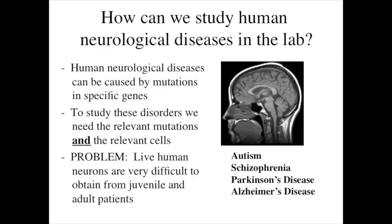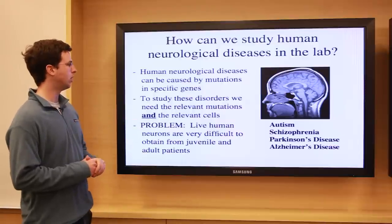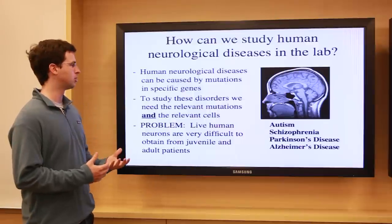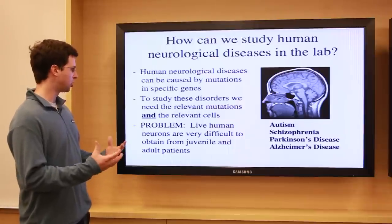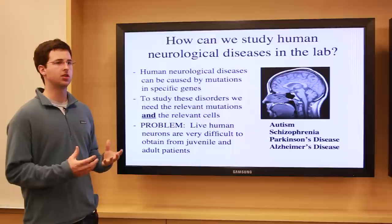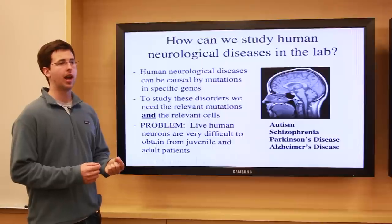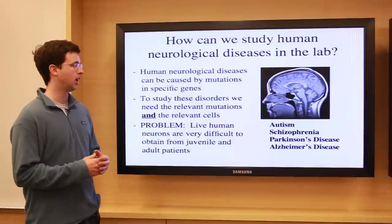A critical problem in the study of human neurological disorders is that, although we understand that these disorders are caused by mutations in specific genes in some cases, we don't have any access to neurons actually from patients suffering from these disorders, because there's no way to generate a culture of human neurons from an adult patient. In order to study the disease, you would need both cells that contain the mutations that cause the disorder as well as the cells that are affected in that disease, which for these disorders is different types of neurons.